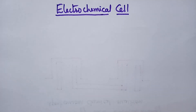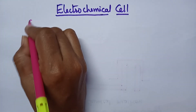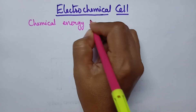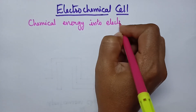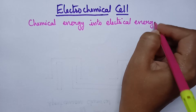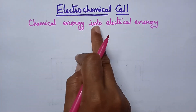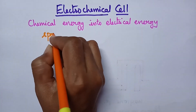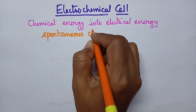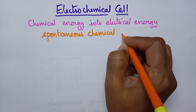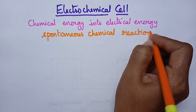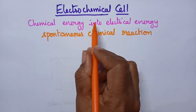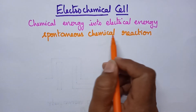Coming to the importance of the electrochemical cell, it is highly useful for the conversion of chemical energy into electrical energy. This conversion is possible through a spontaneous chemical reaction. So, an electrochemical cell is a device used for the conversion of chemical energy into electrical energy by a spontaneous chemical reaction.